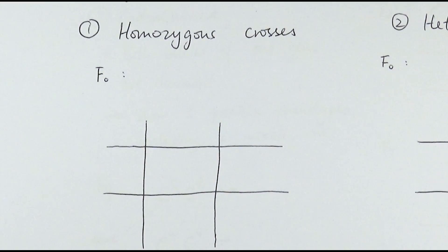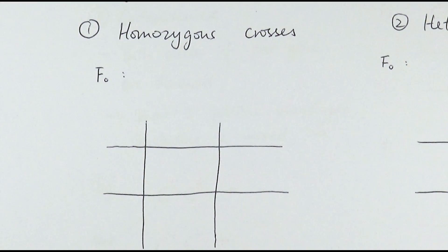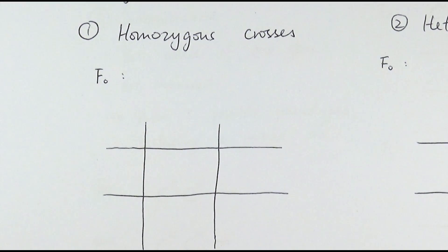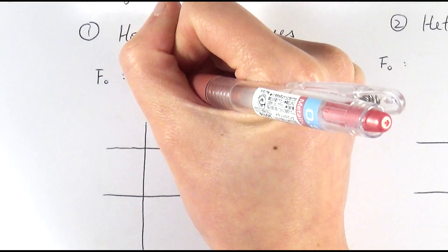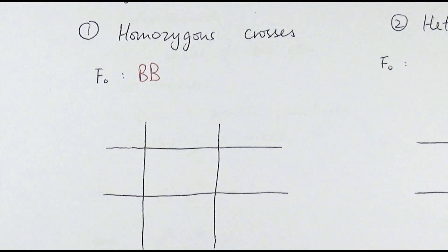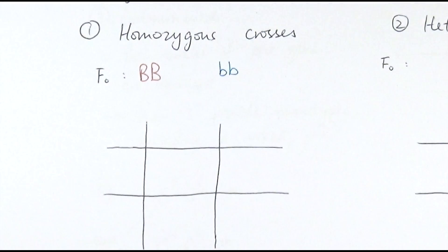The first type is homozygous crosses. We have three different words to describe the genotypes of different individuals: homozygous, which means the same. So we can have homozygous dominant, meaning an individual with both dominant alleles, or homozygous recessive, meaning they have both recessive alleles. Using the letter B to represent this allele, a homozygous cross means a homozygous dominant individual crossing with a homozygous recessive individual.